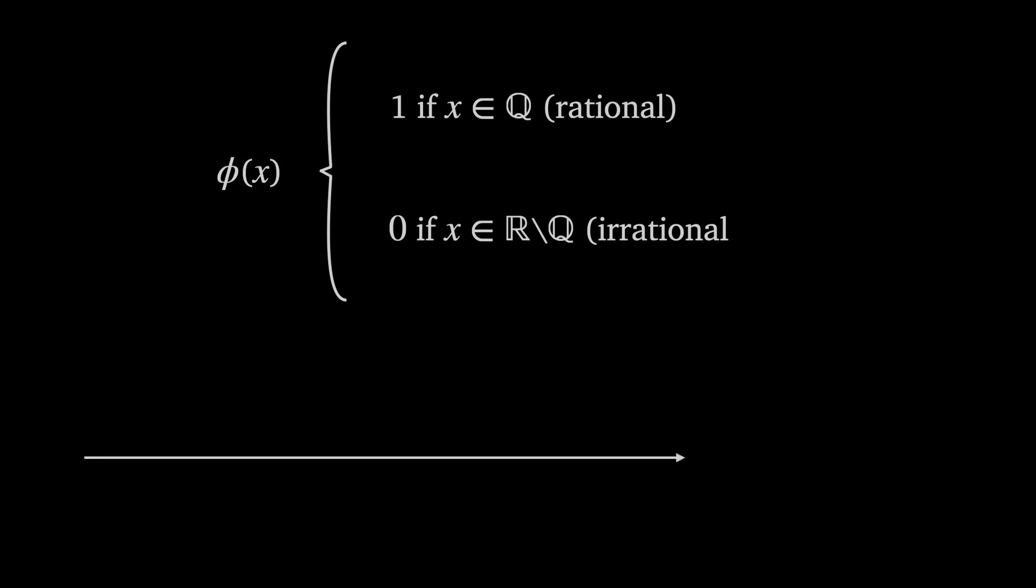So going back to the Dirichlet function as it's now called which equals one when x is rational and zero when x is irrational. Since between any two irrational numbers there are rationals and between any rational numbers there are irrationals the Dirichlet function can't be continuous anywhere on the real line and it was a first function of this kind to be described.